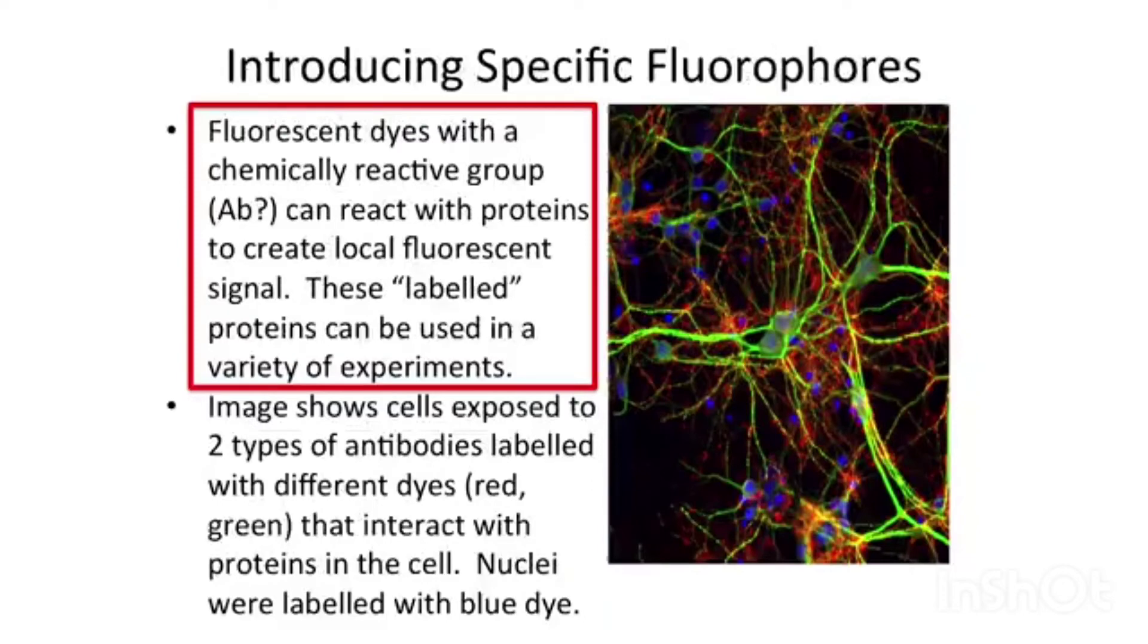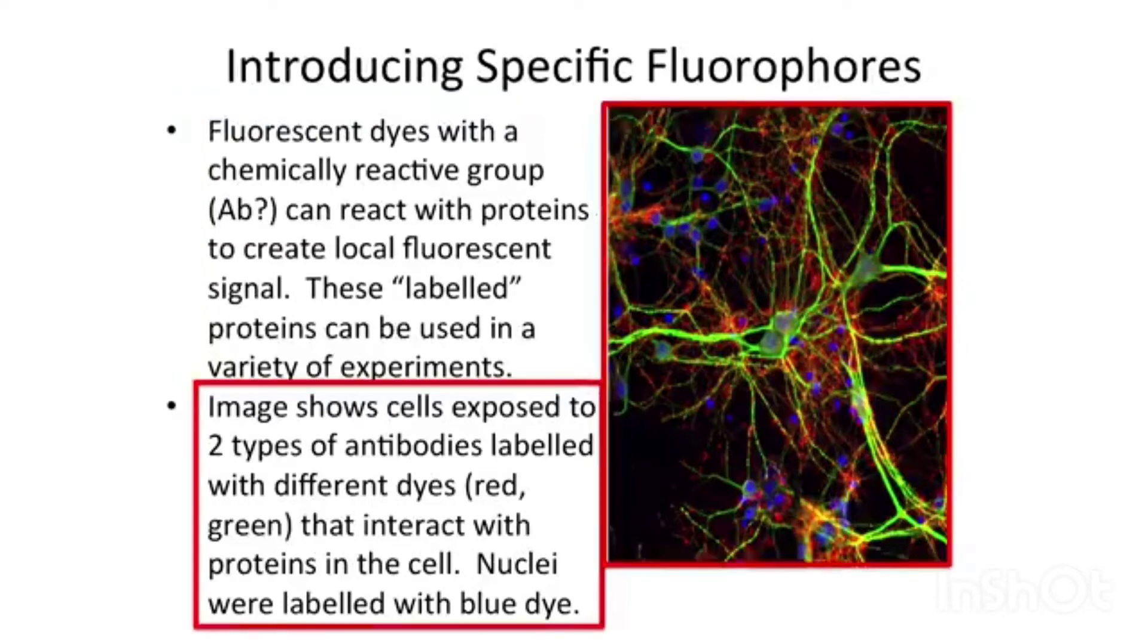Fluorescence microscopy has opened new opportunities to look at where specific molecules are in the cell. Fluorescent dyes with some sort of group, usually an antibody, that can react with a specific protein is used to create a fluorescent signal where that target protein lies. You can use these fluorescently labeled antibodies in a variety of experiments. The image here shows cells exposed to two types of antibodies. One is labeled with a red dye and reacts with one protein in the cell. The other is labeled with a green fluorescent dye that interacts with another protein in the cell. These antibodies recognize where those proteins are and light up that region of the cell.